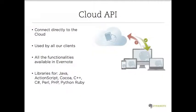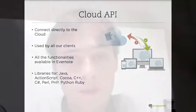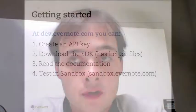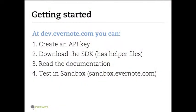So how to get started with the platform — you'll be using the Cloud API. By downloading libraries, you'll be able to access the service directly and be up and running in no time. More specifically: visit dev.evernote.com, start by creating an API key, download our SDK so you'll have the libraries and sample code, get through the documentation — you'll definitely find a lot of helpful information there — and finally start testing and working on the sandbox. In no time you will have something that works really well.